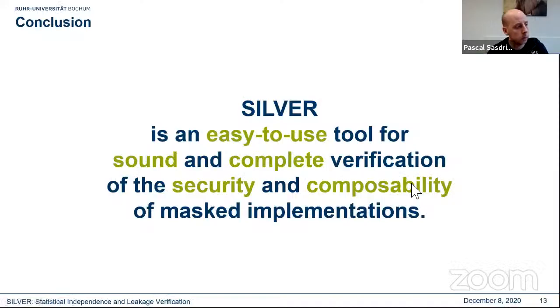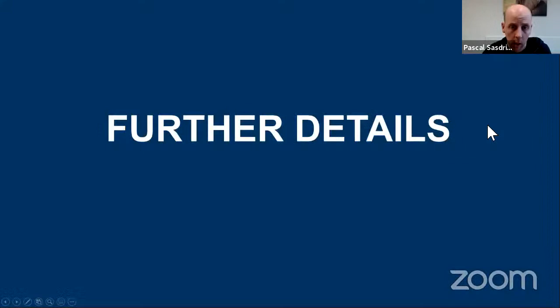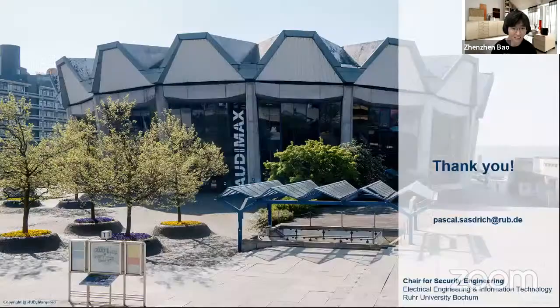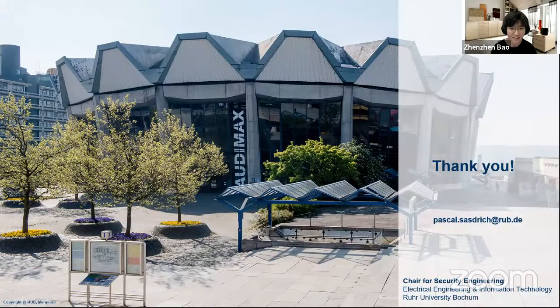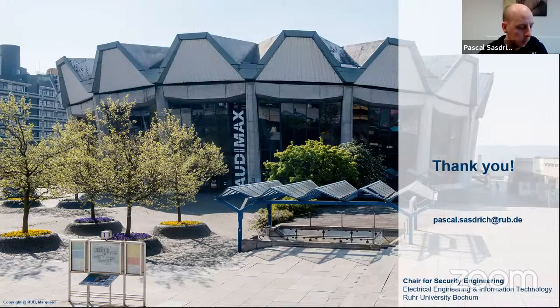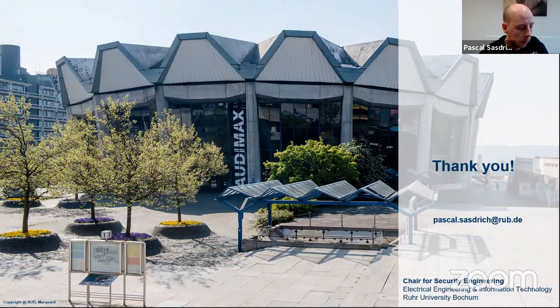So in conclusion, we can say Silver is an easy-to-use tool for sound and complete verification of the security and composability of mask implementations. And if you are interested in the tool, I would like to refer you to our GitHub page where you can find the tool, but also here I provide the link to our document if you are interested in the details. And if you have any comments or if you have any questions on the code or the document, please feel free to reach out to me or my colleagues using the email address that you can find on this slide. So with this, I would like to thank you for your attention, and I'm happy to answer your questions. Okay, we have a question from C. Is transition leakage considered the Rochester HD in Silver?